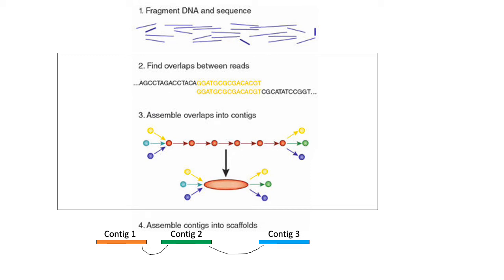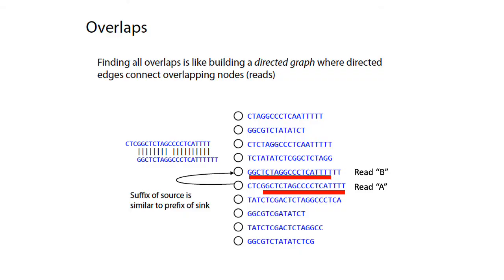Next, we'll talk about strategies to identify overlaps between pairs of reads, as well as using those overlaps to assemble contigs. The construction of what's called an overlap graph helps a lot in terms of building an assembly, at least conceptually. The way you build an overlap graph is that suppose you sequence 10 reads from a given genome, represented by the blue fragments on the right of this slide.